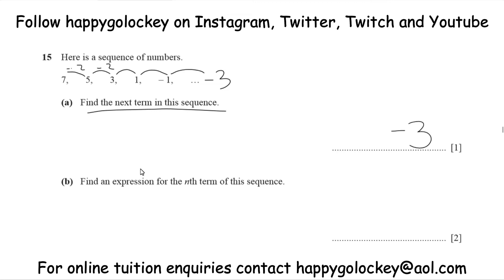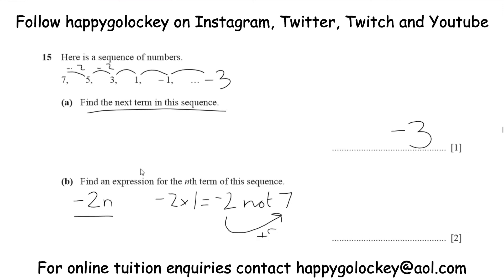For part b, find an expression for the nth term — that means what's the rule for wherever you want to be in this sequence. You might want to find the 10th, 100th, or 1000th term, and it would take too long to keep going down in 2s a thousand times. The first thing we notice is it's going down in twos, so it's effectively the minus 2 times table — it's something to do with minus 2n. However, the first term is 7, but minus 2 times 1 only gives us minus 2. So what do we add to get from minus 2 to 7? Add 2 to get to 0, then add another 7 — so add 9 total. It's not just the minus 2 times table; it's minus 2n plus 9.